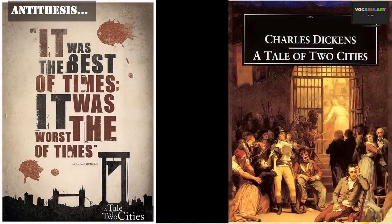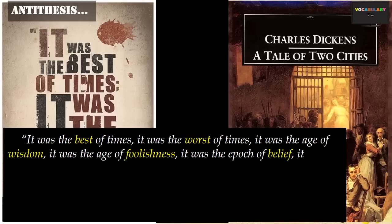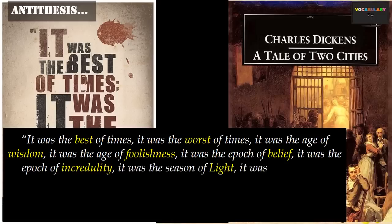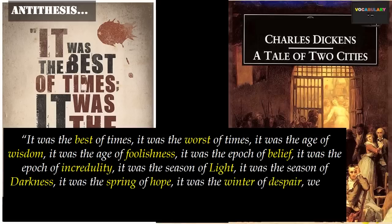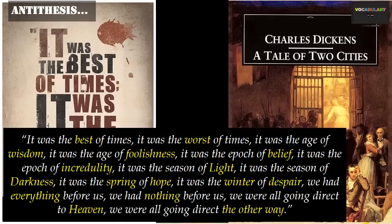An outstanding example is the opening lines from Charles Dickens' novel A Tale of Two Cities: 'It was the best of times, it was the worst of times. It was the age of wisdom, it was the age of foolishness. It was the epoch of belief, it was the epoch of incredulity. It was the season of light, it was the season of darkness. It was the spring of hope, it was the winter of despair. We had everything before us and yet we had nothing before us. We were all going direct to heaven, we were all going direct the other way.' The contrasting ideas in parallel structures highlight the conflict discussed in the novel.